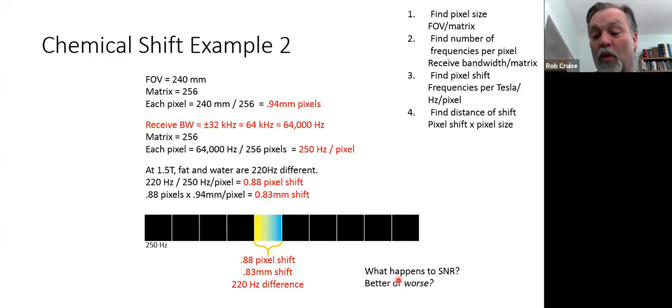Now what happens to signal to noise when you make this change? When you go from a narrow bandwidth to a wide bandwidth, remember that you're sampling frequencies outside of the spike of the useful information. So more noise is included in the signal that is coming back from the patient. More noise in relationship to a standard signal spike. So your signal to noise goes down. That ratio goes down because you're including more noise. So it becomes worse.